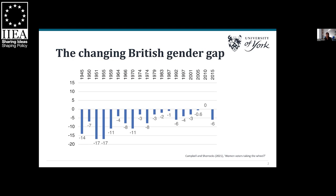In Britain, although the gender gap declined over time, women still remained on average more supportive of the Conservatives while men remained more supportive of Labour — until 2017, when a modern gender gap appeared at the aggregate level for the first time. For the first time, women became more likely than men to vote Labour and less likely to vote Conservative. In research I conducted with Rosie Shorex at the University of Manchester, we found that this 2017 gender gap was driven particularly by younger women who were more supportive of Labour and more pessimistic about their economic and financial situation — and that economic and financial pessimism appeared to be driving their higher relative support for Labour.